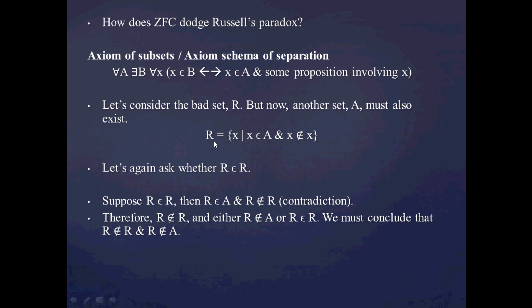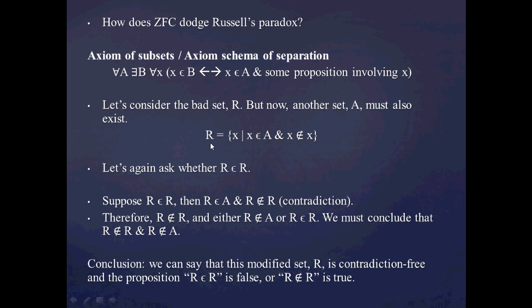So this set R is perfectly well formed. It's free of contradiction. So the conclusion from this modification of the subset axiom is that we can say that this modified set R is free of contradiction, and that the proposition R is an R is false. Right? That was the question that we first asked, whether R is an R or not. So we say that this question is false.